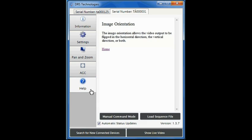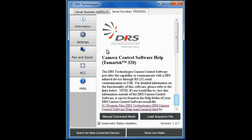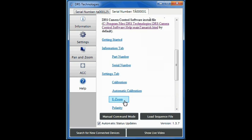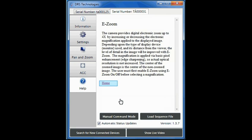You can click the Help tab at any time to access the on-screen Help menu. Click on any topic link for more information. Click the Home link to return to the Help menu.